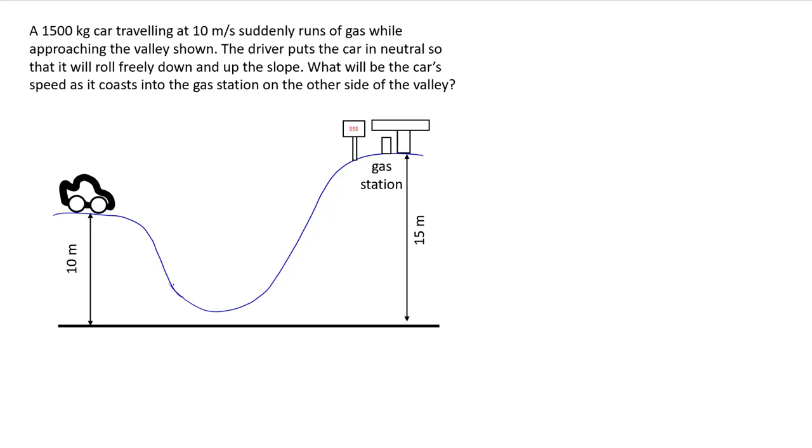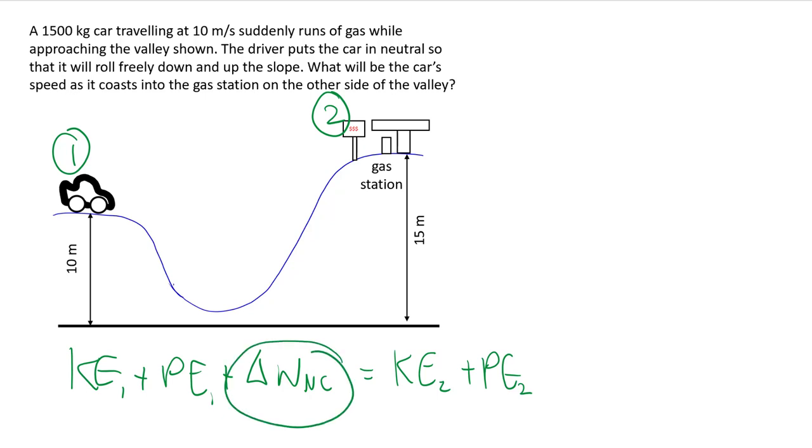But before we can actually make use of conservation energy, we do have to establish that it is actually easy to use. What makes energy easy to use? If you look at the entire energy balance, calling this the first point and then the next point we're interested in is that point, it is only easy to use as long as this term in the middle, this non-conservative work is zero. So throughout the process from one to two, we got to check that no non-conservative work is done.